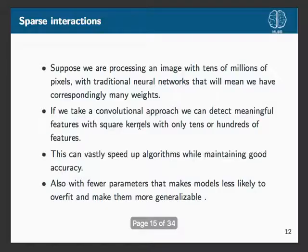Another advantage of convolutions: if we have very large images, fully connected nets have a very large number of weights. With convolutions we can have a much smaller number of weights. A larger number of weights leads to longer training time and overfitting, so we don't want that. This is called sparse interactions.